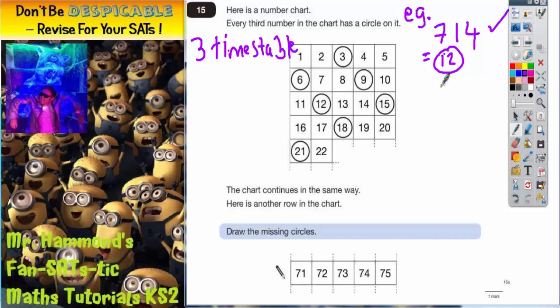However, if I choose 715, then the total of those digits, 7 plus 1 is 8 plus 5 is 13. Well, 13 is not in the 3 times table.